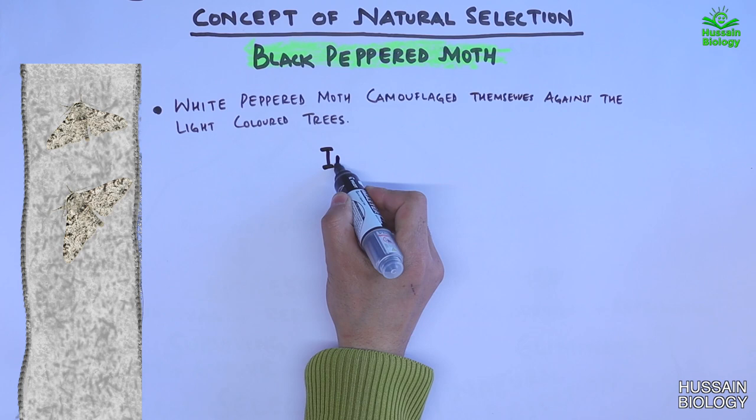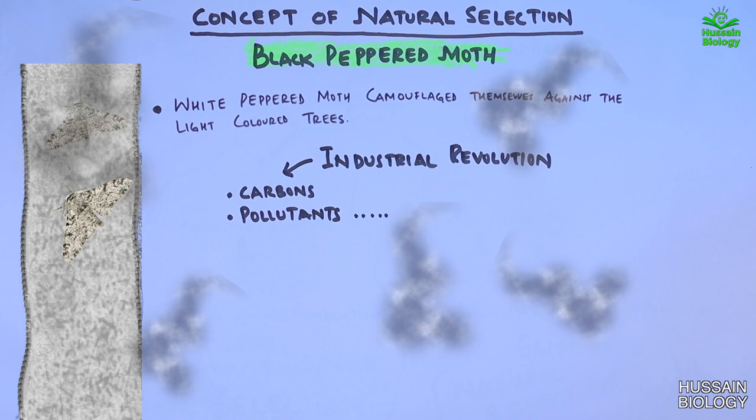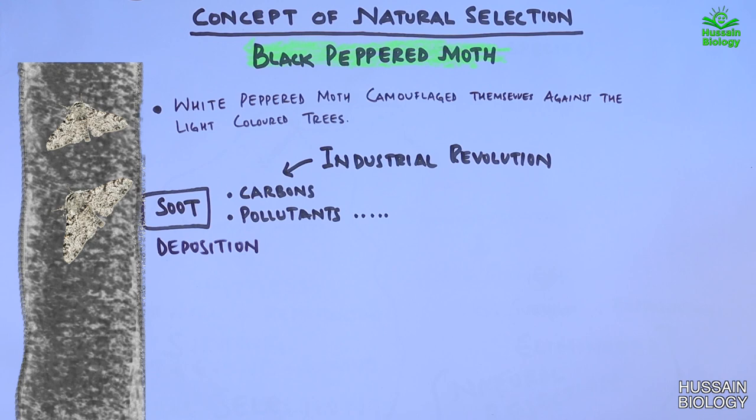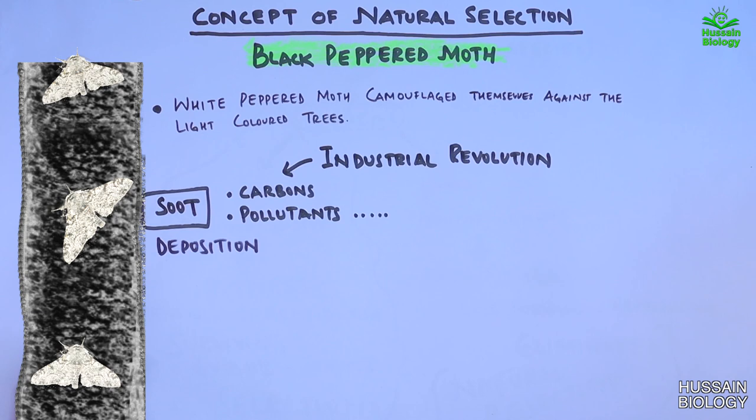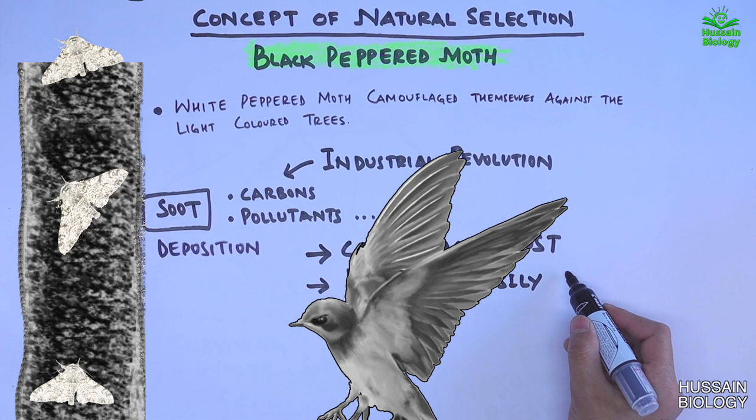But then came the industrial revolution, which changed all the scenarios including the environment of England. We had now carbons in the air and many more pollutants that formed soot and got deposited on tree trunks. From the industrial revolution, the bark of tree trunks changed from light color to dark color. With this, the camouflage by white peppered moths was almost lost, and predators easily hunted down the white peppered moths.